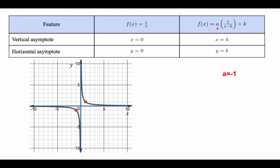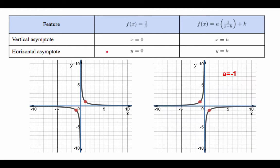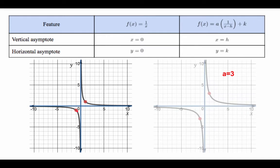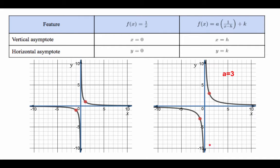If a = 3, that's a vertical stretch — we multiply all the y-values by 3. So if y was 1, the new value becomes 3; if it was negative 1, it becomes negative 3. Apply that to every single point. This becomes a lot easier if you use more than one point to give a sense of how it changes.